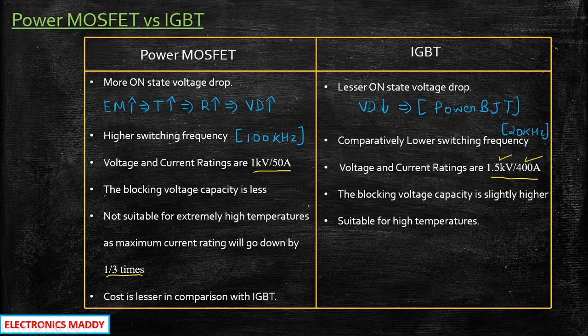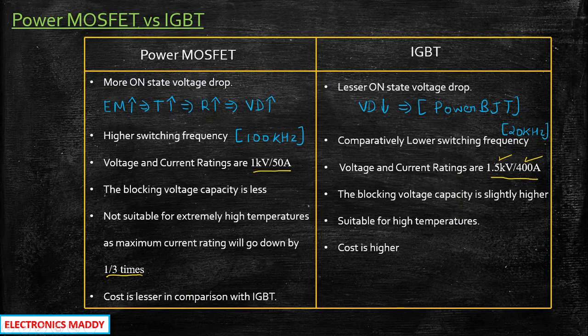The cost of a power MOSFET is comparatively cheaper with respect to IGBT. When IGBT can operate at higher voltage and current ratings, you would obviously expect the cost to be much higher. So these are some of the major differences between power MOSFET and IGBT.